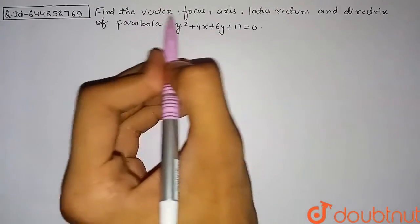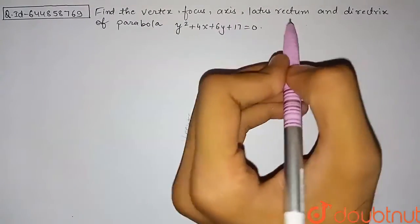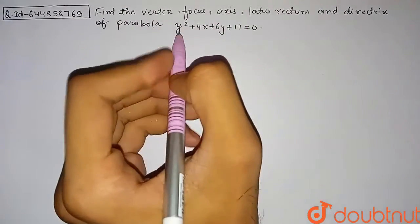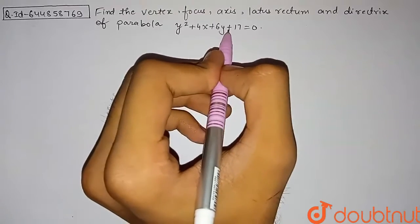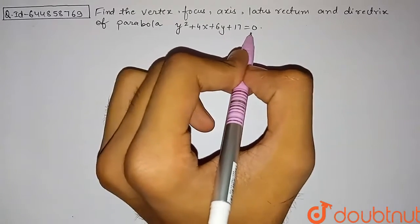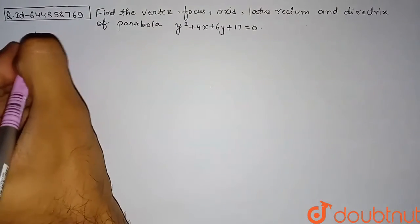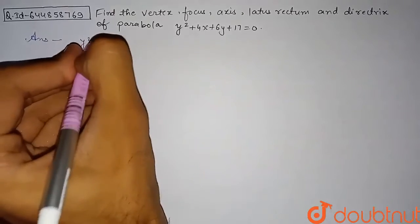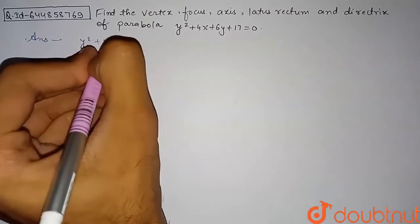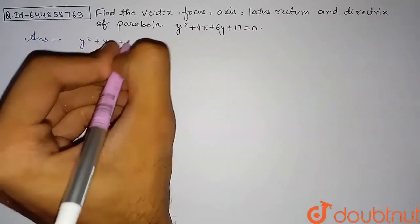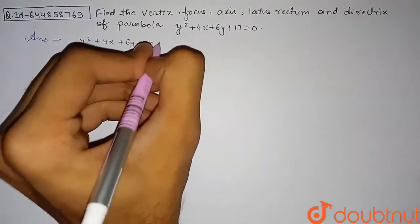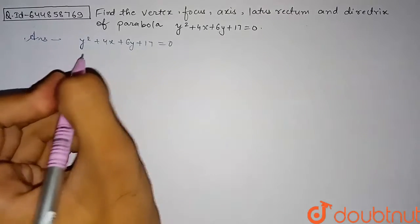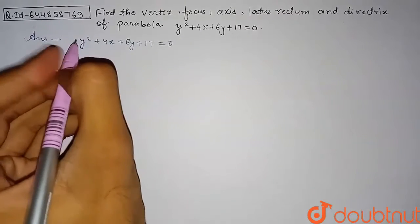Find the vertex, focus, axis, latus rectum, and directrix of the parabola y² + 4x + 6y + 17 = 0. Let's begin with the solution. Our given parabola is y² + 4x + 6y + 17 = 0. First, we will convert this parabola equation into standard form.